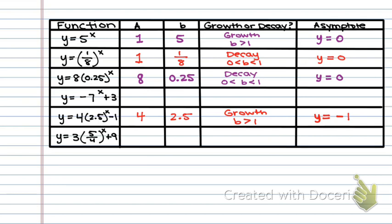For the last one, my A value is 3. My B value is 5 over 4. And this is the one where I feel like a couple of y'all will have made some mistakes. Because you see a fraction, and you're like, a fraction means decay. But this one is actually growth. Because 5 over 4 is not a proper fraction. 5 over 4 is actually 1.25, and 1.25 is greater than 1. My asymptote then will be Y equals 9.